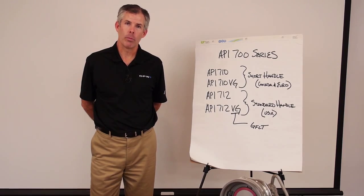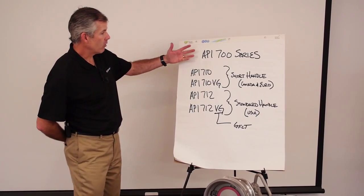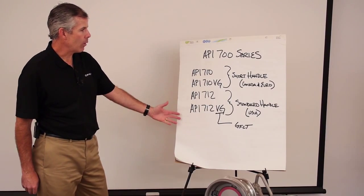First, let's look at the part numbers. The API 700 series has several different models available.